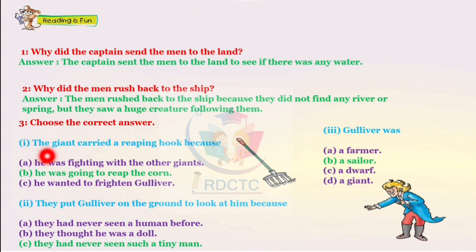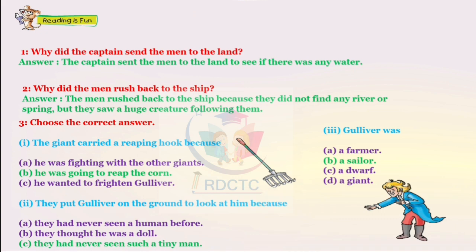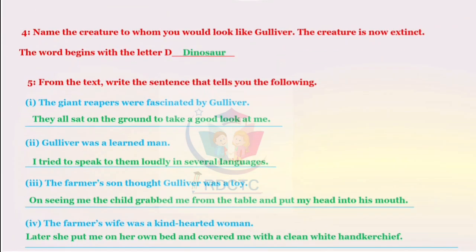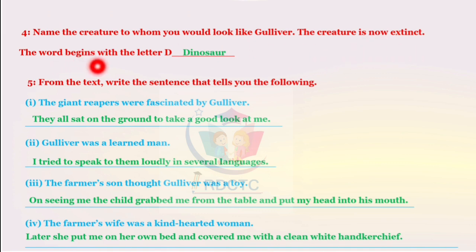Now, choose the correct answer. The giant carried a reaping hook because he was going to reap the corn. They put Gulliver on the ground to look at him because they had never seen such a tiny man. Gulliver was a sailor. Name the creature to whom you would liken Gulliver — the creature is now extinct. The word begins with the letter D, and the answer is Dinosaur.